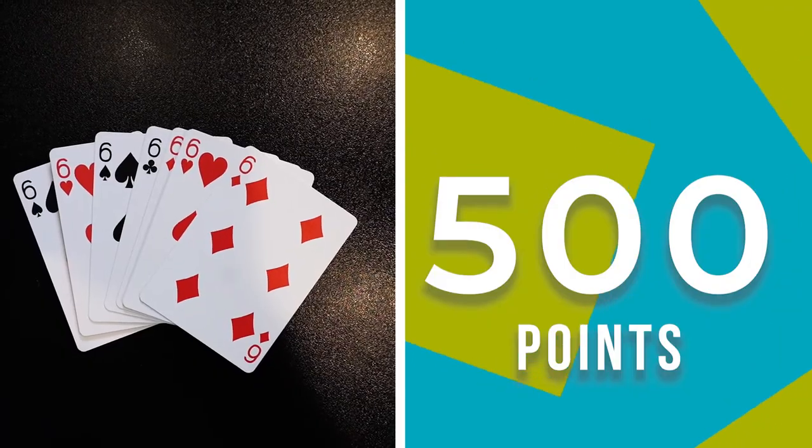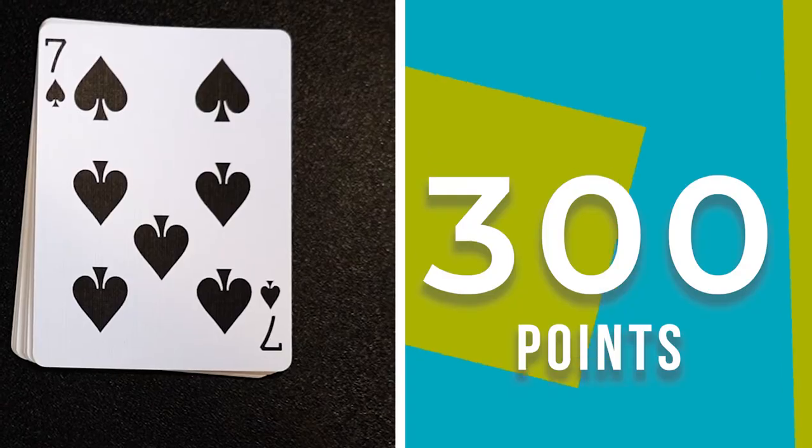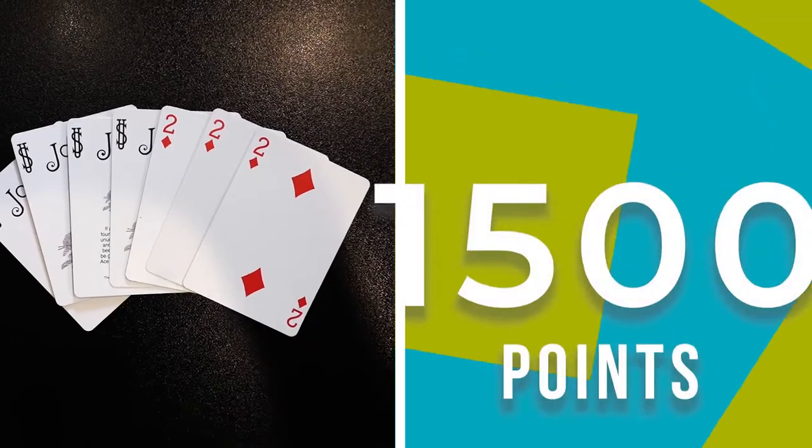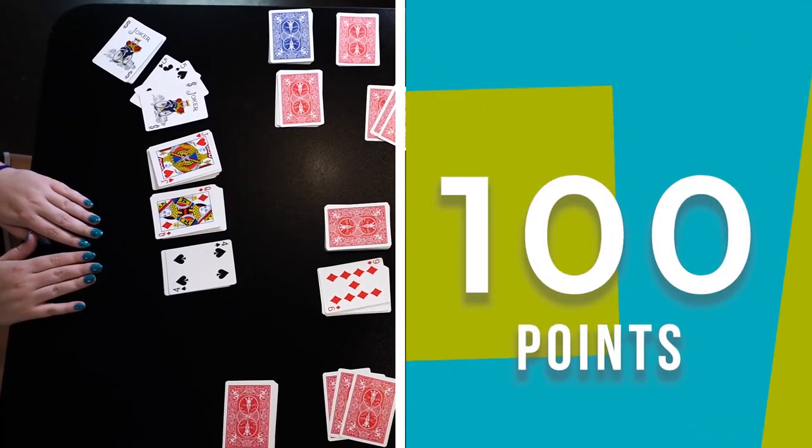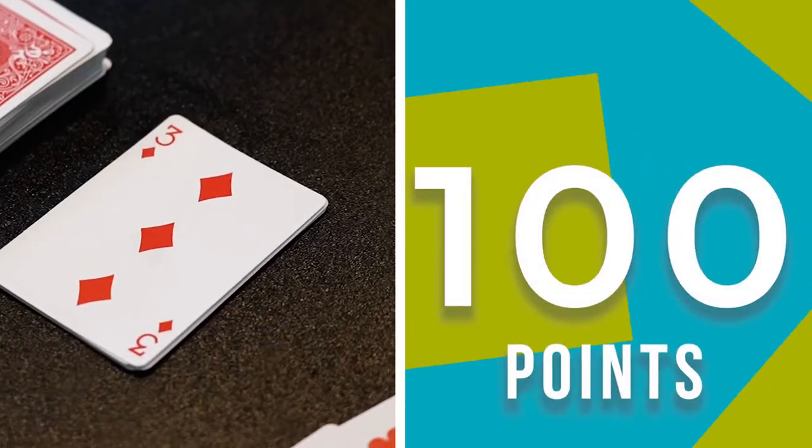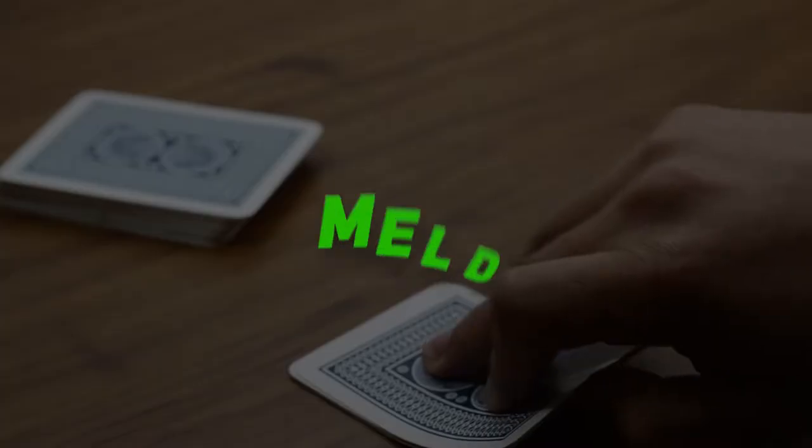Each clean book is worth 500 points. Each dirty book is worth 300 points. Each wild book is worth 1,500 points. Going out gets you 100 points and each red three is worth 100 points.